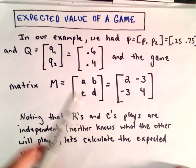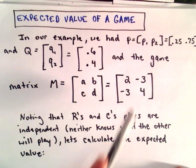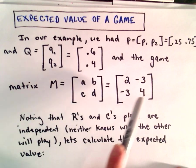Our game matrix, generically we can write that as A, B, C, D, and we had entries 2, negative 3, negative 3, and 4.